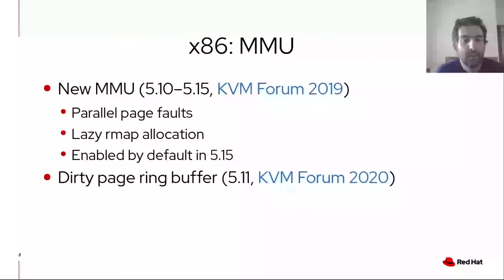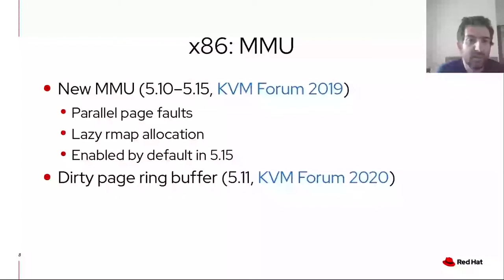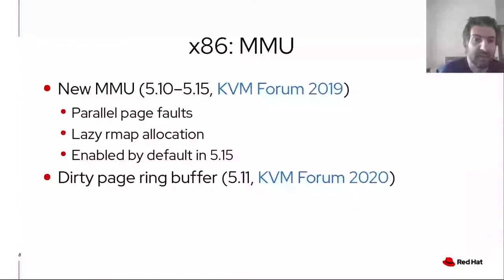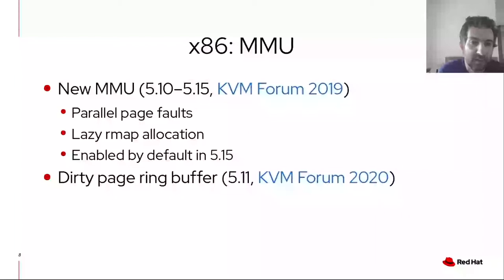On x86, we have to report the completion of two projects that were presented at the 2019 and 2020 KVM Forums. One is the new page table management code, also known as MMU in KVM's code. The new code enables multiple optimizations, such as parallel handling of page faults and lazy allocation of reverse maps from guest physical addresses to host physical addresses. The new MMU will be enabled by default in the next release, 5.15. Another important new feature is the exposure of dirty page information through a ring buffer, with interesting performance characteristics presented by Peter Shuh at KVM Forum 2020.